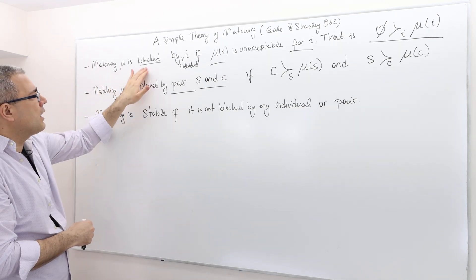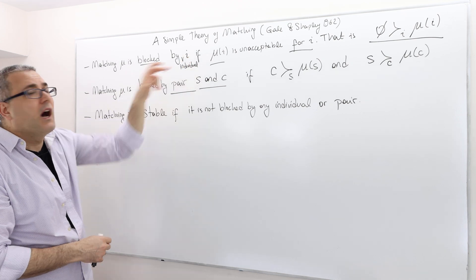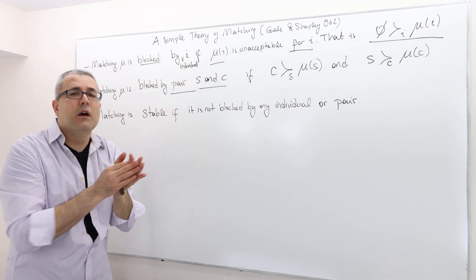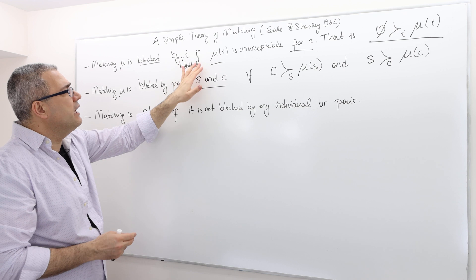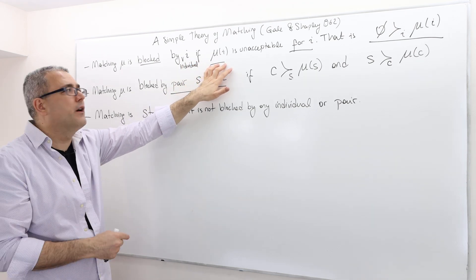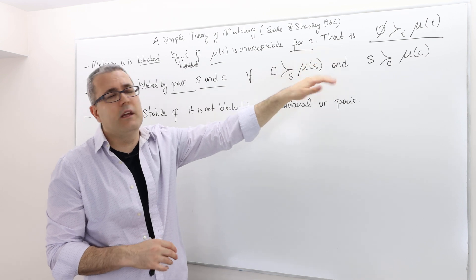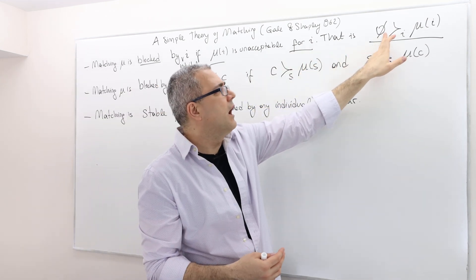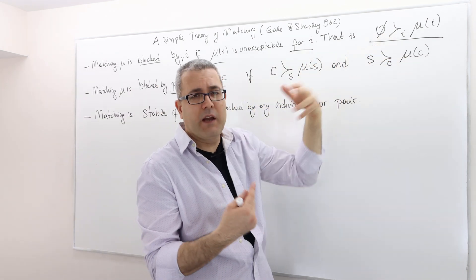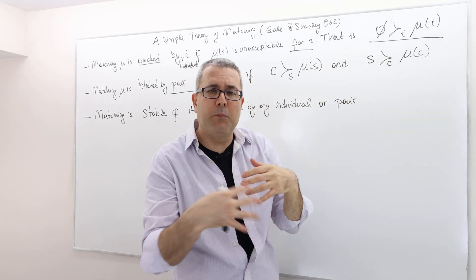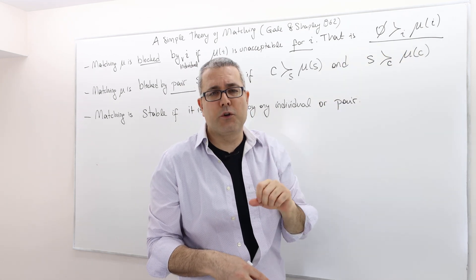So matching mu is blocked by individual i. i here can be student or college. If mu i, the match of individual i, is unacceptable for individual i, which basically means being unmatched, phi or empty set, is strictly preferred by i over his or her match.